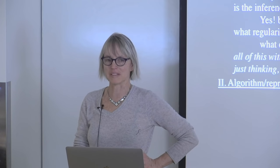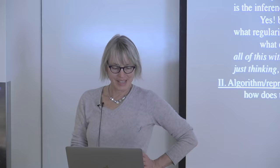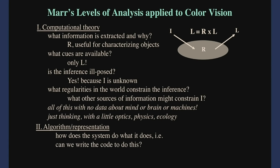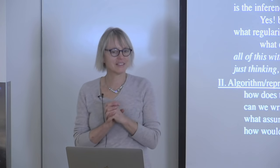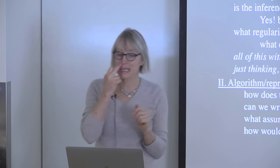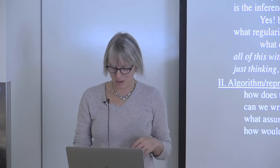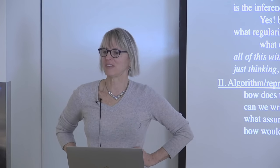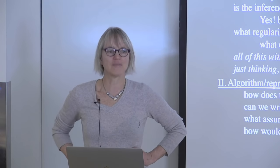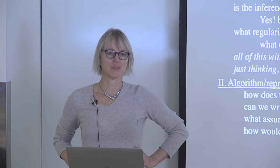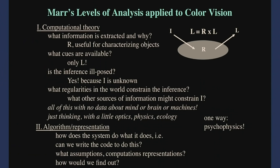At the level of algorithm and representation, we ask: what is the code that solves that problem? How does the system do what it does? One way to find out how humans do this is psychophysics — showing people things and asking what they see. You can do it in very sophisticated ways or informally. Here's a demo: I'm going to show pictures of cars and you shout out the color as fast as you can.